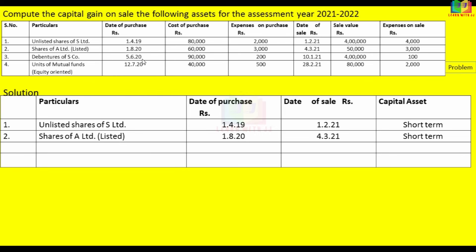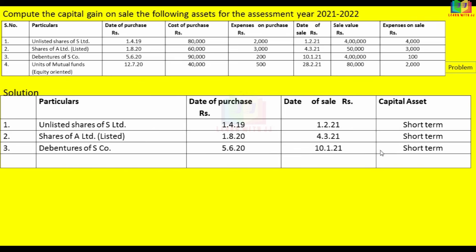For a 12-month holding period with purchase date 5th June 2020, if sold on 10th January 2021, that is within 12 months — short-term. If sold on 5th June 2021, that is also within the 12-month period — short-term.